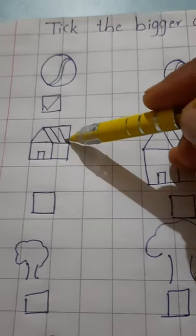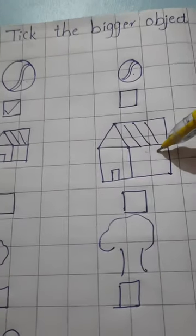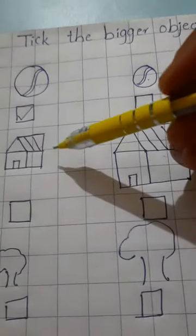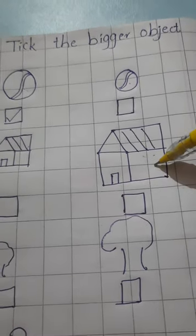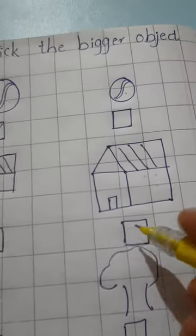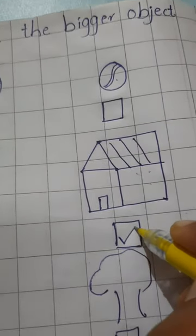Now this is a house. This is also house. But which is the bigger one? This is the smaller and this is the bigger. So here you have to tick the bigger house.